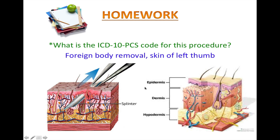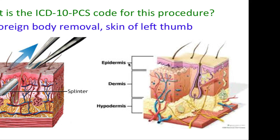Before we get into how to code this procedure, I want to briefly go over the anatomy and physiology of the skin layers. The top layer of the skin is known as the epidermis. This thin portion of the skin mainly exists to absorb sunlight, water, and nutrients, and to protect the deeper layers. The deeper and thicker layer of the skin is the dermis. This contains the sweat gland, hair root and follicles, blood vessels, sensory receptors, and other important structures of the integumentary system.